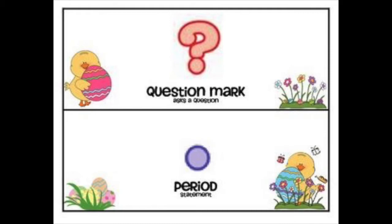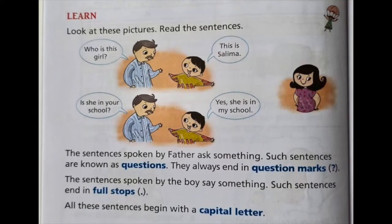So on page number 8, there is a discussion between a father and a daughter. Let's read that. Put your finger in the circle. 'Who is this girl?' — question mark. So this man is asking, 'Who is this girl?' — asking. So there is a question mark. Let's see what the girl is saying — answering. 'This is Salima.' She has answered, 'This is Salima.' Full stop.